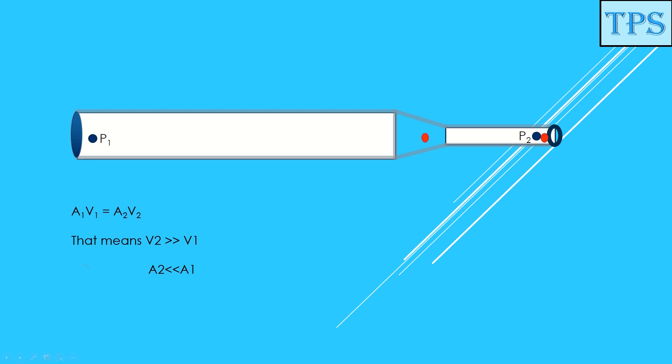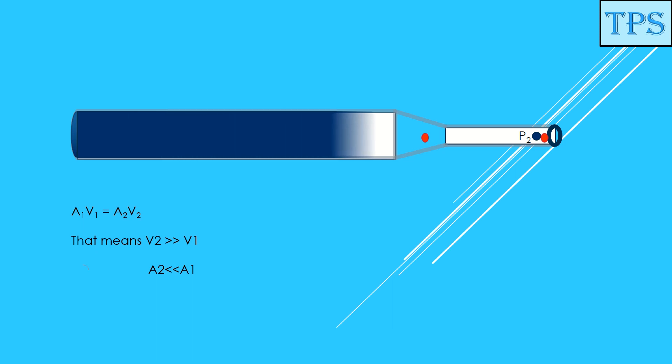If water flows from this pipe, then notice its speed. Its speed is slower in the large pipe but higher in the small pipe. But the flow rate would be the same.